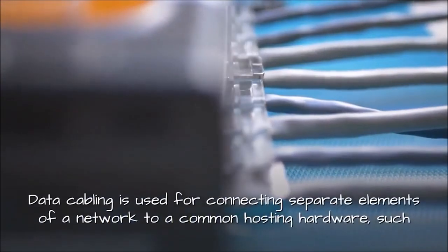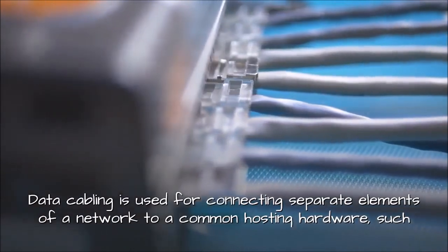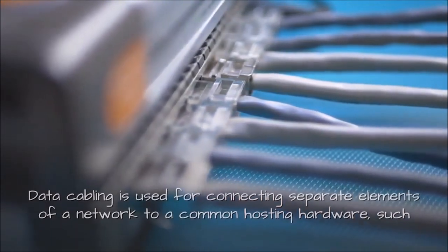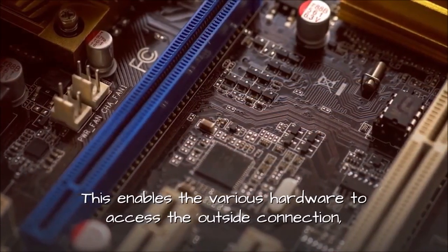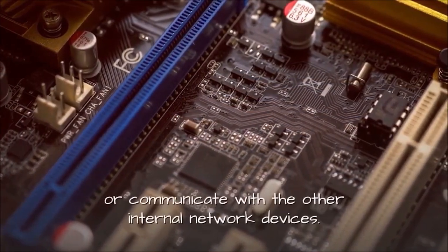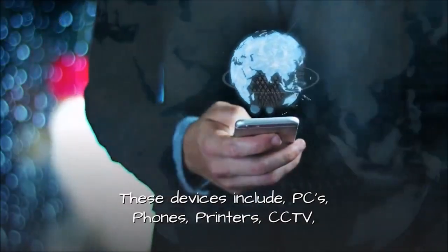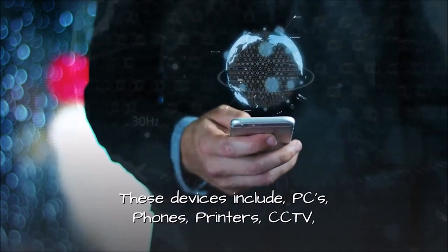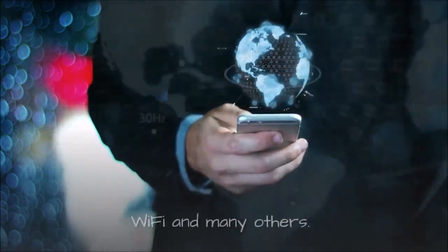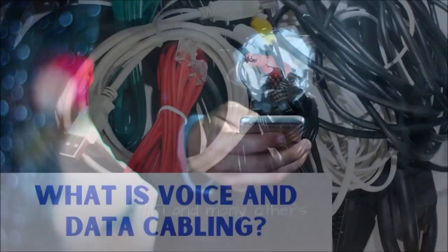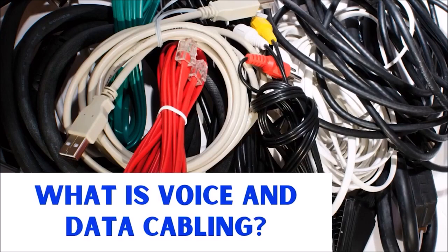What is data cabling used for? Data cabling is used for connecting separate elements of a network to a common hosting hardware, such as a data switch or internet router. This enables the various hardware to access the outside connection or communicate with the other internal network devices. These devices include PCs, phones, printers, CCTV, Wi-Fi, and many others.